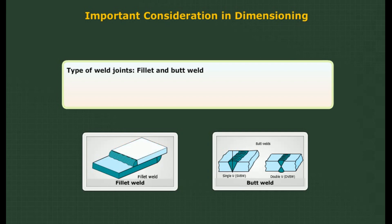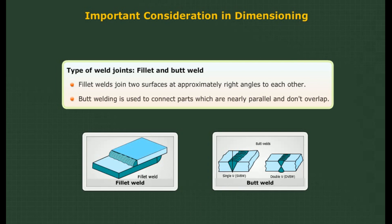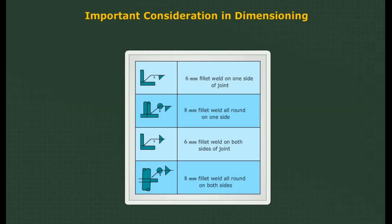Types of weld joints — fillet and butt weld: Several types of weld beads can be produced. Apart from strength considerations, fillet welds are preferred whenever possible. Fillet welds join two surfaces at approximately right angles to each other. Butt welding is used to connect parts which are nearly parallel and do not overlap. The notation convention for welds is shown on the right.